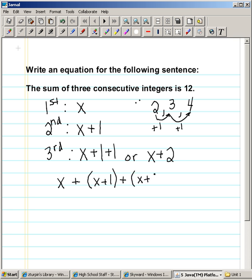I also know that 'is' is the key word in a sentence to represent an equal sign in mathematics. So the sum of three consecutive integers is or equals 12.